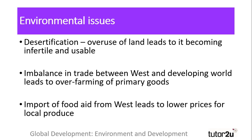A further environmental issue is that of desertification, or land that has become infertile and unusable for agriculture. Dependency theorists argue that desertification has increased due to the imbalances in trade relationships between the developing world and the West. As Western consumers have more choice in who supplies them with primary goods, this drives down the prices of those goods as there is an increase in supply. This results in farmers trying to produce more goods for sale just to make ends meet, resulting in over-farming the land and making it infertile. This has long-term impacts for food production, leading to scarcity of some goods in the developing world. This situation is made worse as large suppliers such as the USA import their excesses to the developing world, undercutting local producers and driving them to produce more for less.